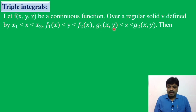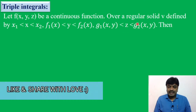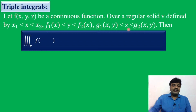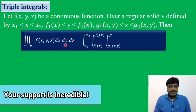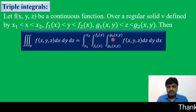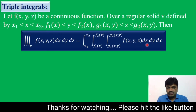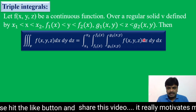And then g1 of xy less than z less than g2 of xy — z is a function of x and y. He defined the triple integral over V, f of x, y, z, dx dy dz, as equal to integral x1 to x2, integral f1(x) to f2(x), integral g1(x,y) to g2(x,y), f of x, y, z, dz dy dx. Since z limits involve x and y, we write dz first, then dy, then dx. This is the proper order.